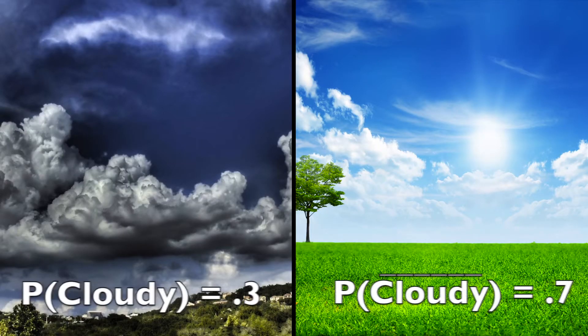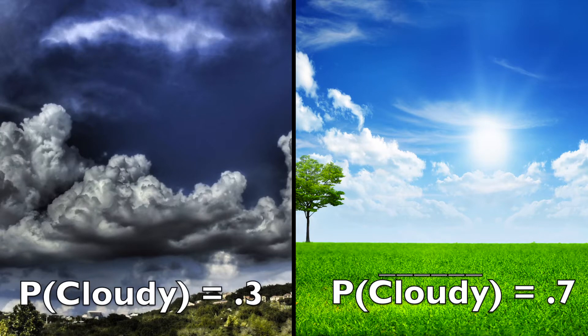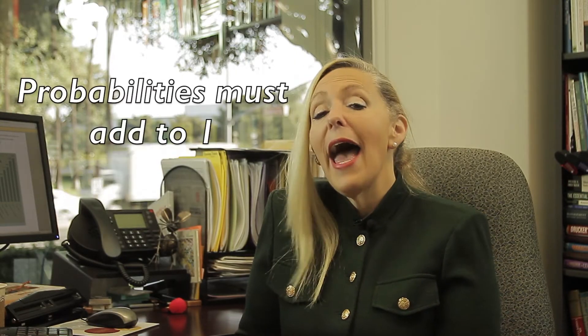Next, the sum of all the probabilities in an experiment equals 1. This is why we intuitively know that if the probability it's cloudy tomorrow is 0.3, the probability it's not cloudy is 0.7. It's because the probabilities must add to 1.